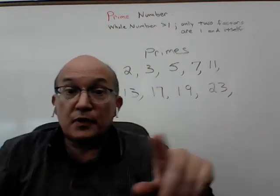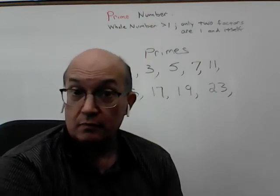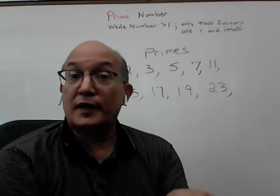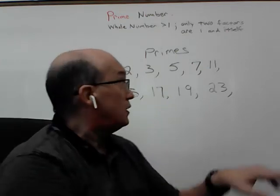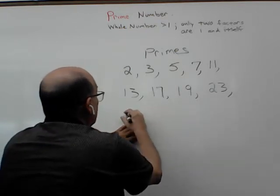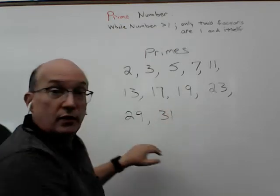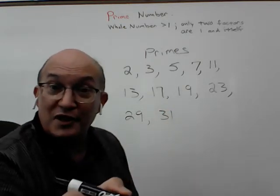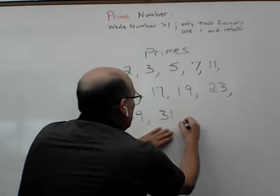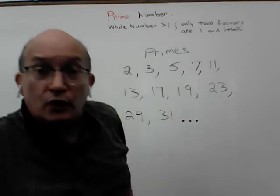We're going to skip the next two odd numbers: twenty-five, because twenty-five has five as a factor, and twenty-seven, because three times nine is twenty-seven. The next prime after twenty-three is twenty-nine, and then thirty-one is prime. Thirty-three is not prime — thirty-three is three times eleven.